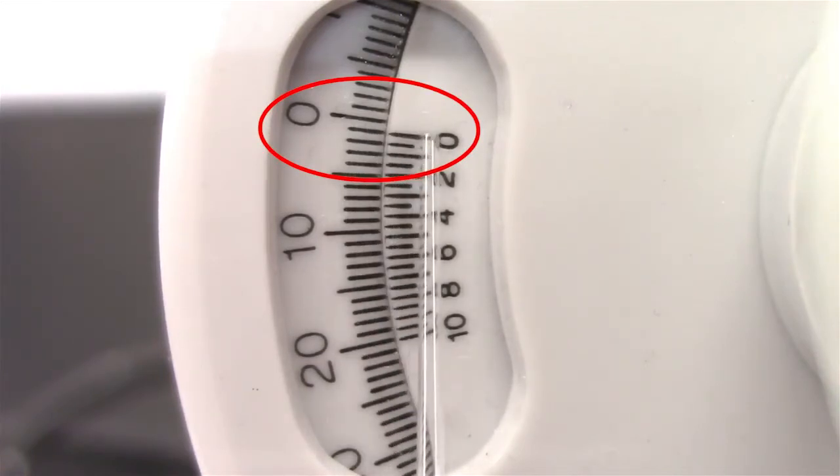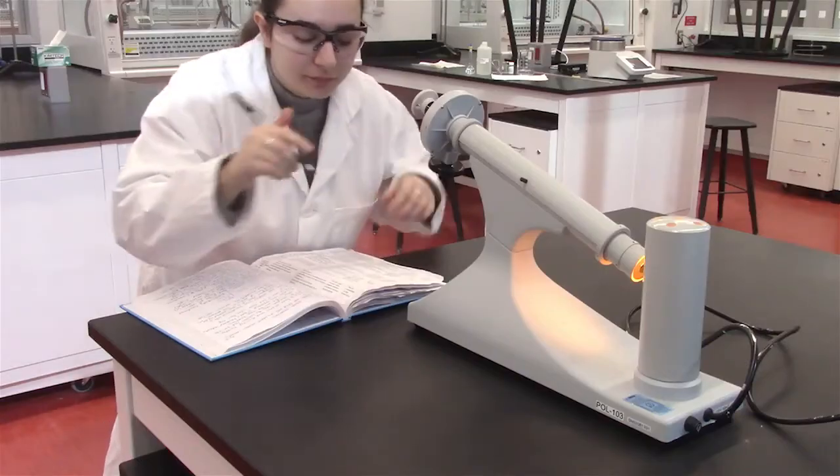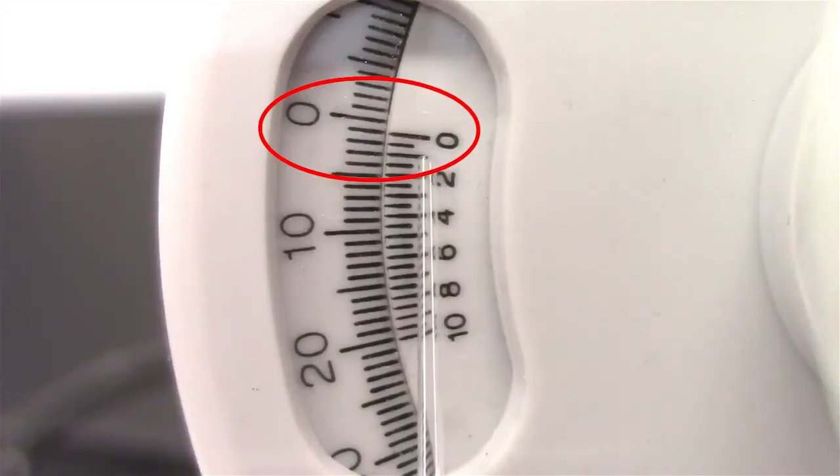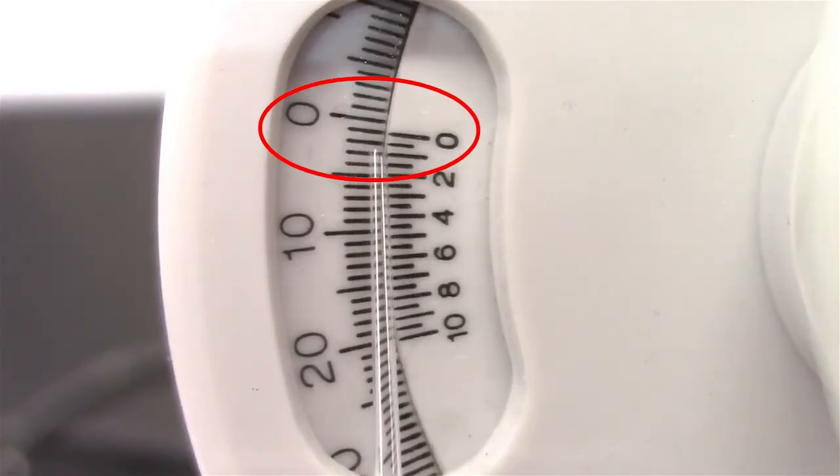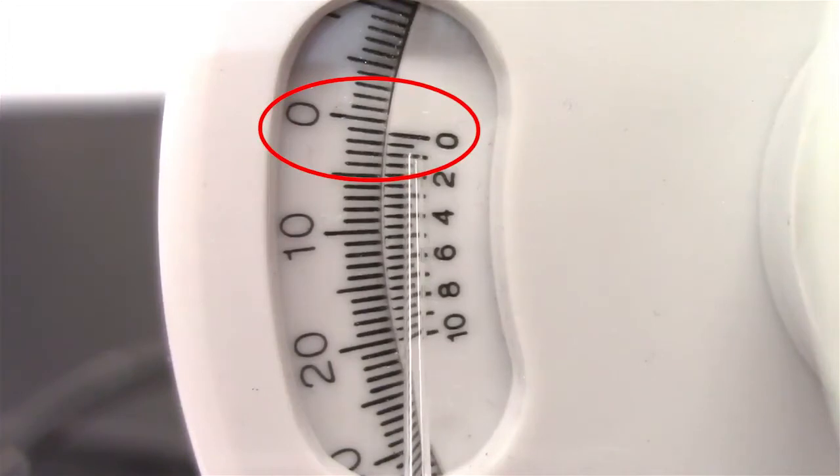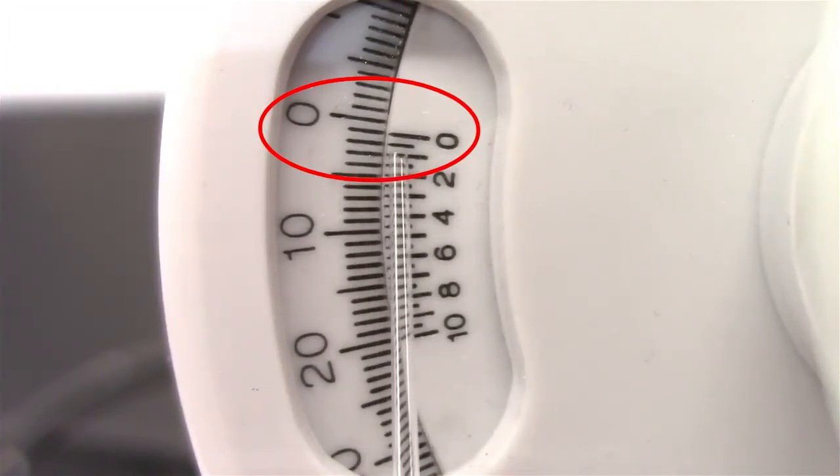In this example, the whole number is 1. To note the decimal, see where a line in the inner scale matches up with the line on the outer scale. In this example, the decimal number is 1.